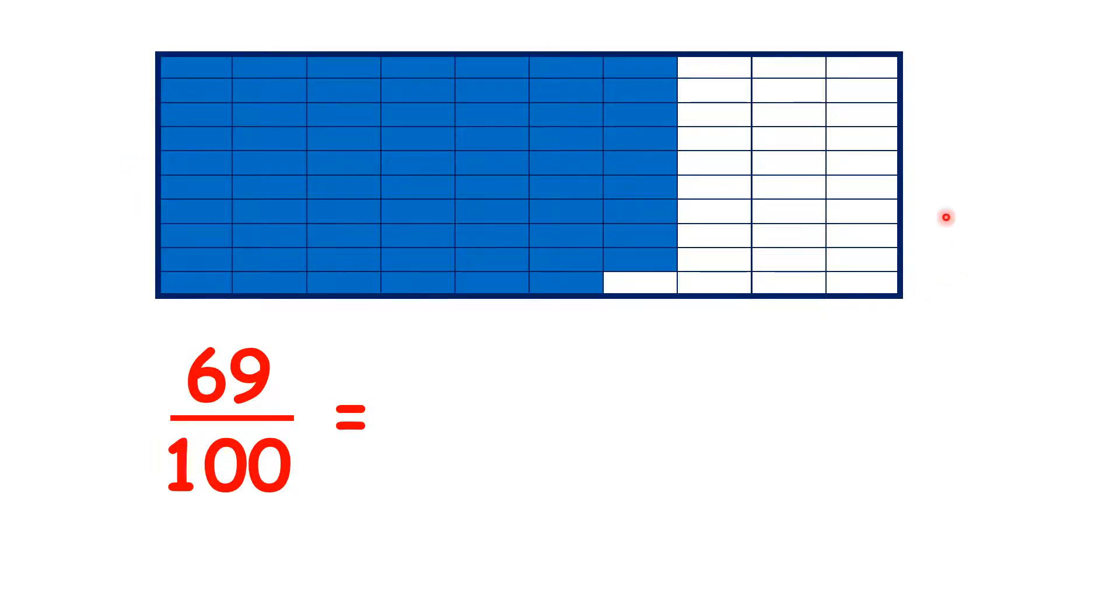Look at this large rectangle. If you counted all of the small rectangles within it, you would count 100 small rectangles, because we have 10 columns and 10 rows, and 10 times 10 is 100.